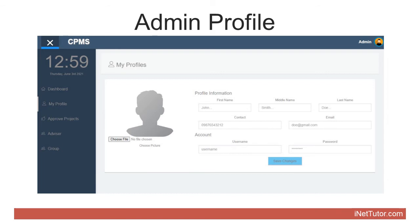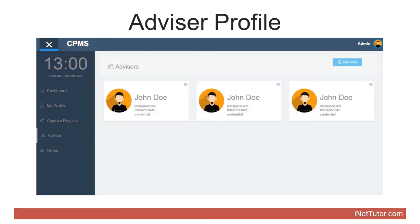The admin profile requires: (1) Full name, (2) Contact, (3) Email, (4) Username, (5) Password. The advisor form requires the details of the advisors to be encoded in the system, including: (1) Name, (2) Credential, (3) Email, (4) Contact, (5) Avatar, (6) Username, (7) Password.